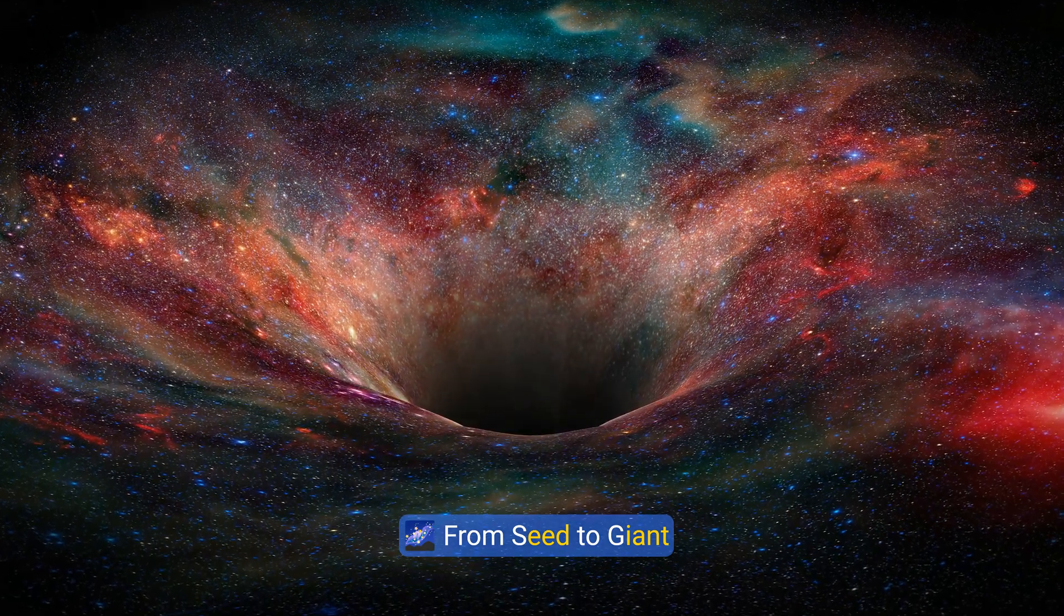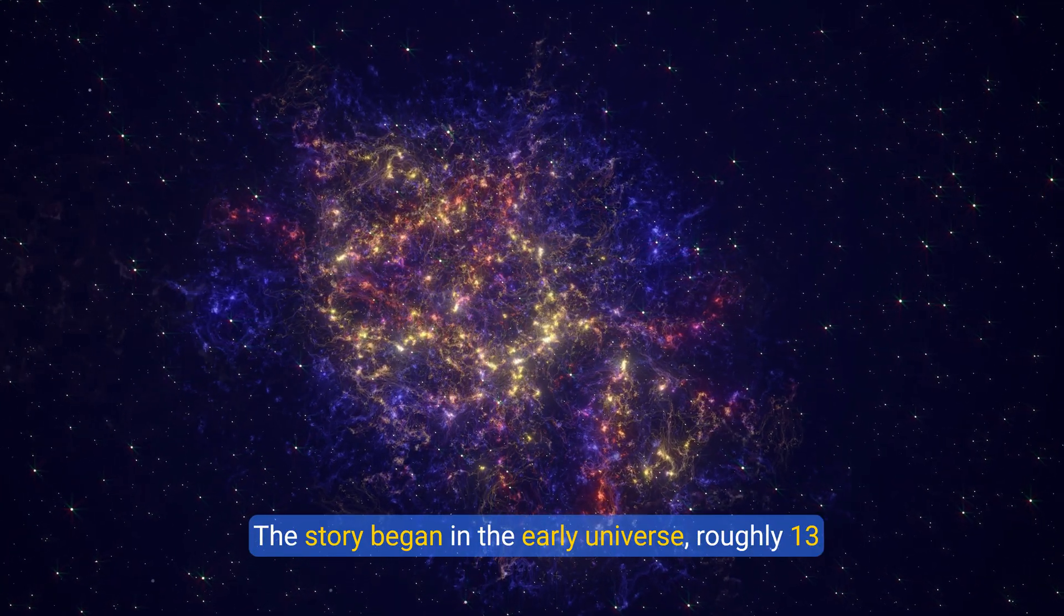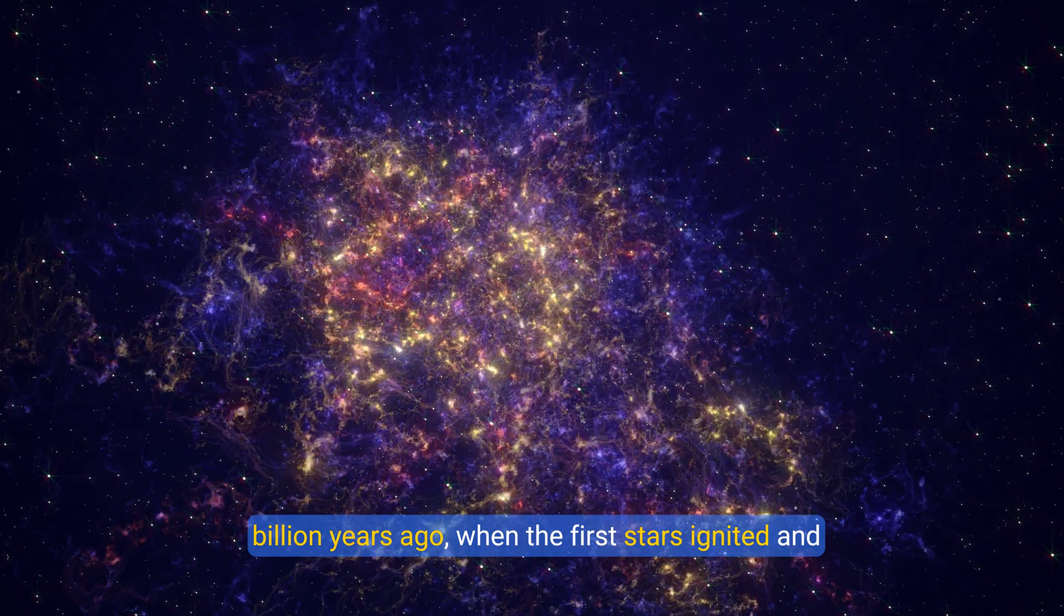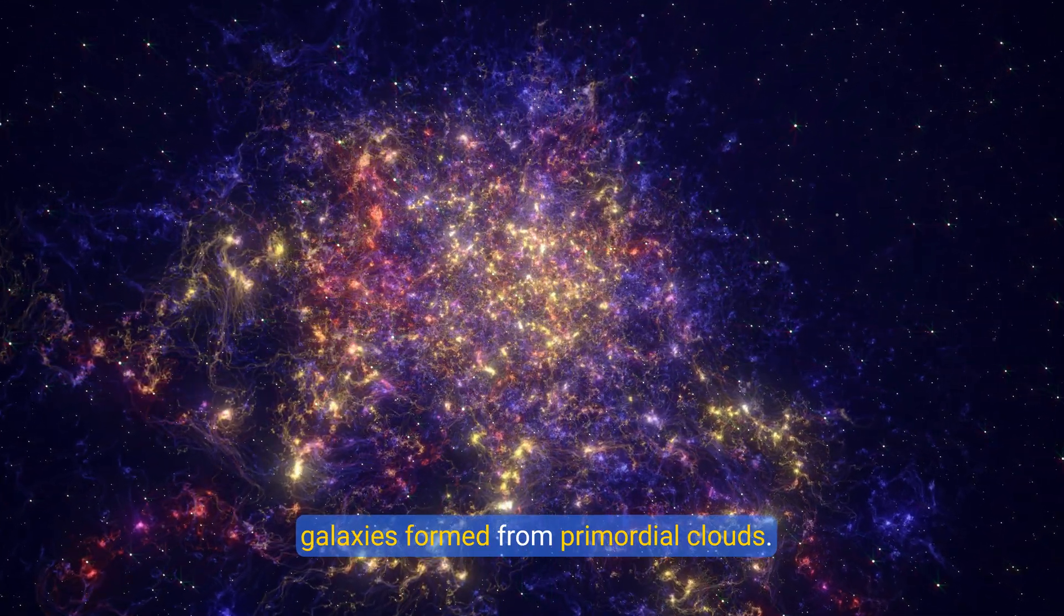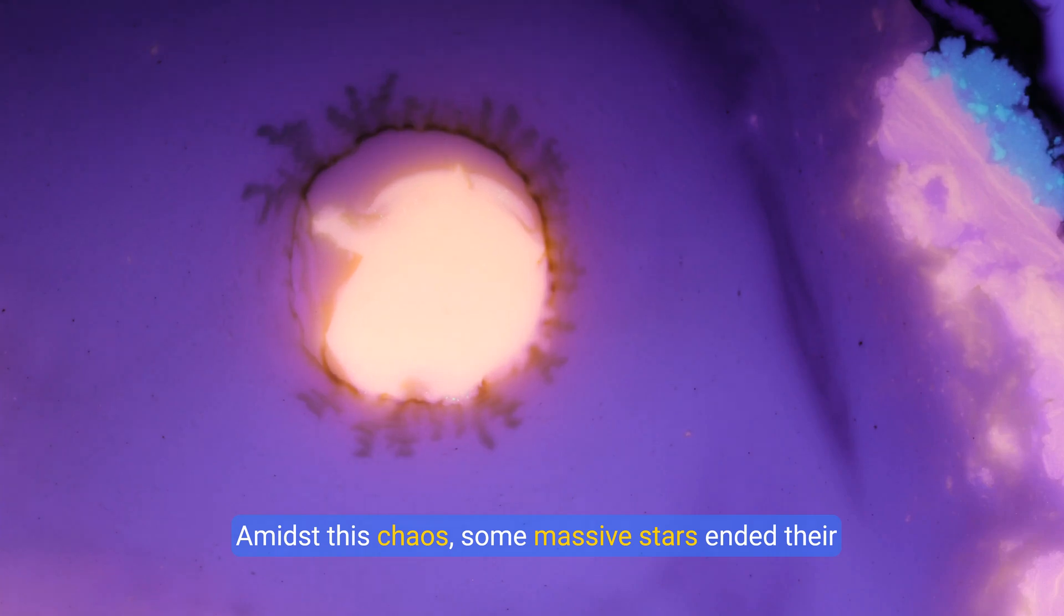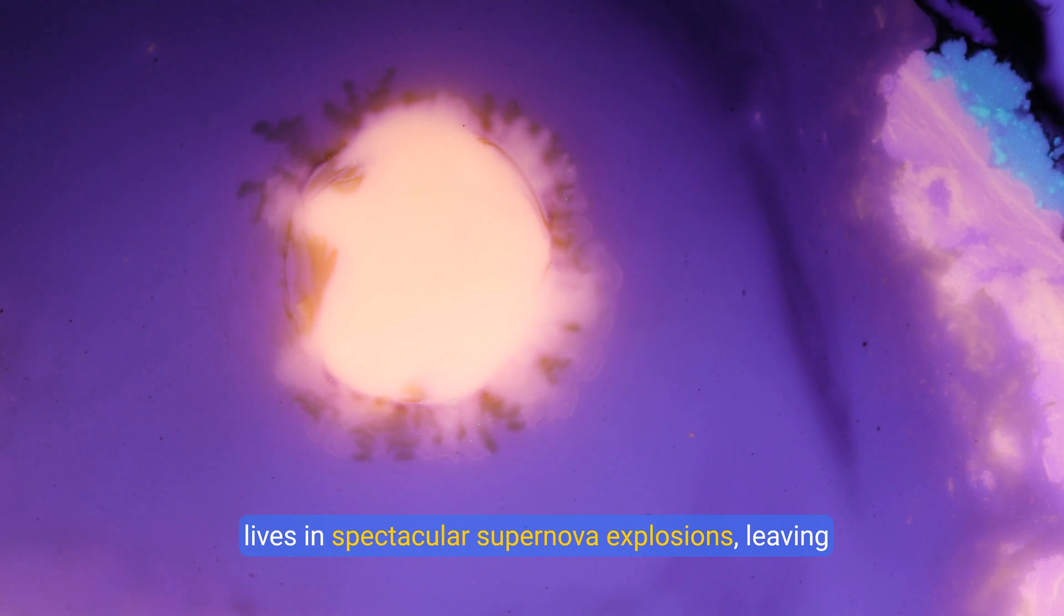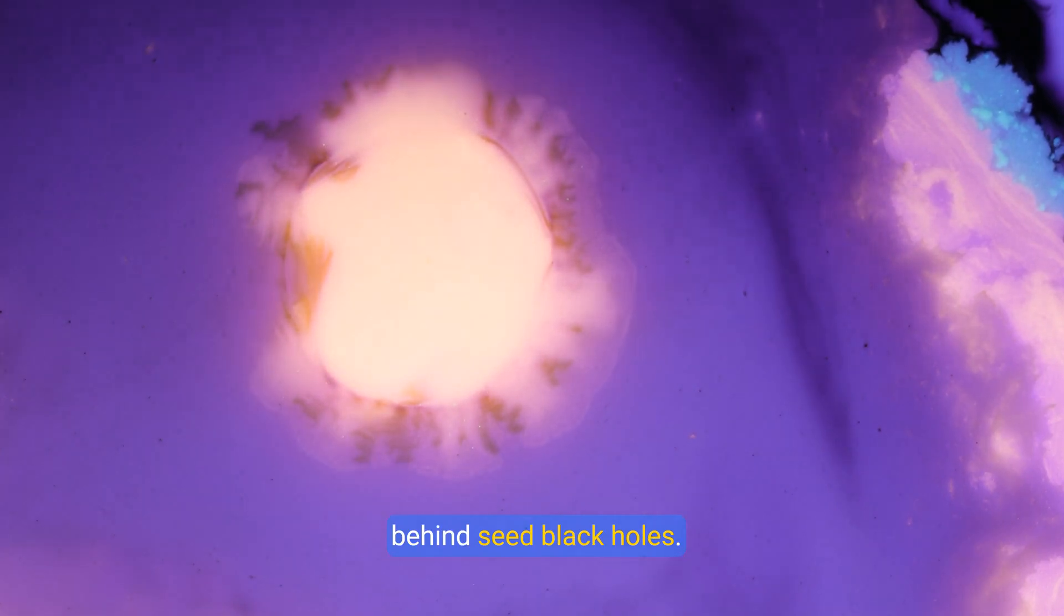From seed to giant, the story began in the early universe, roughly 13 billion years ago, when the first stars ignited and galaxies formed from primordial clouds. Amidst this chaos, some massive stars ended their lives in spectacular supernova explosions, leaving behind seed black holes.